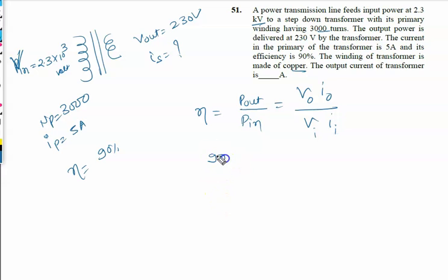Efficiency voltage is 90%, so it is 90 by 100. Output is 230. Output current we have to calculate, that is X. Input voltage 2.3 x 10 raised to power 3. Input current 5A. So we will solve it for X.